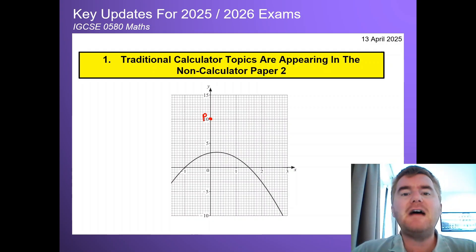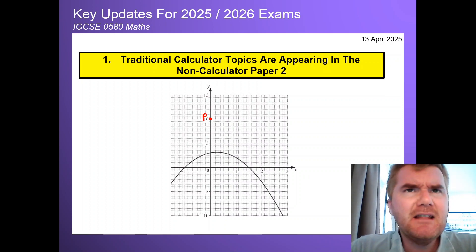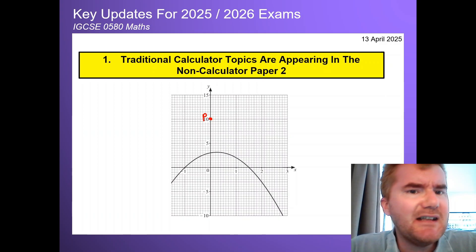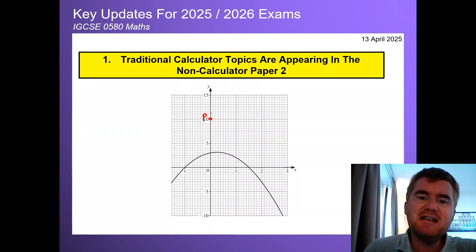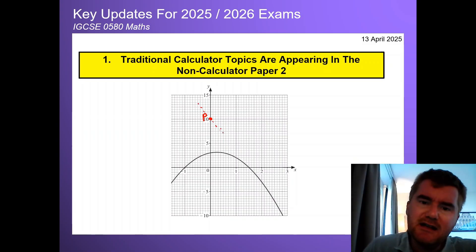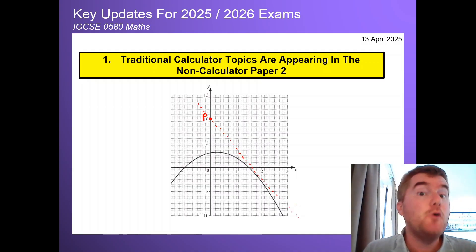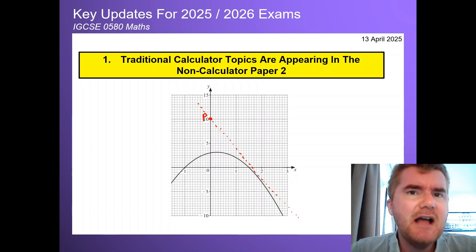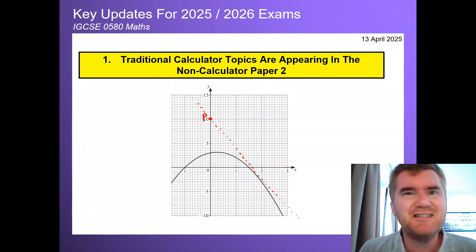The first point is that traditional calculator topics are now appearing far more often in the non-calculator paper two. That's not a total surprise because the papers are now roughly equal, but it was still surprising nonetheless. For example, one question gave you a point P and a quadratic, and you had to draw the tangent line to that quadratic and then find the equation of that line. If someone had asked me a year ago what kind of question this would be, I would have almost exclusively said a paper four question — and one that hasn't come up often in recent years. They've used this 2025 update to take some of those older topics from 2018 and 2019 and give them a paper two revamp, as I like to call it.